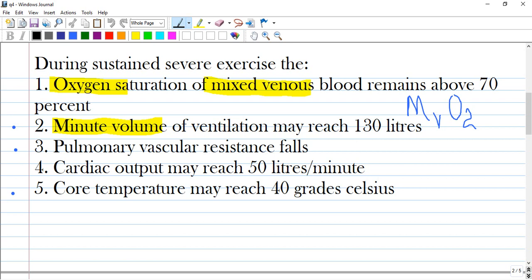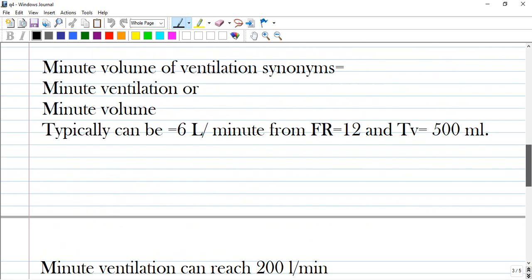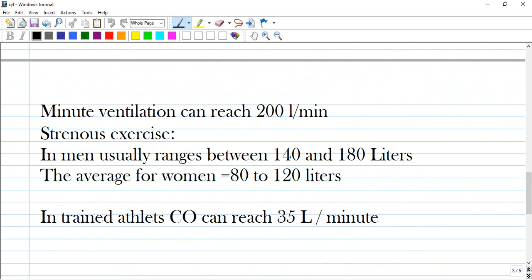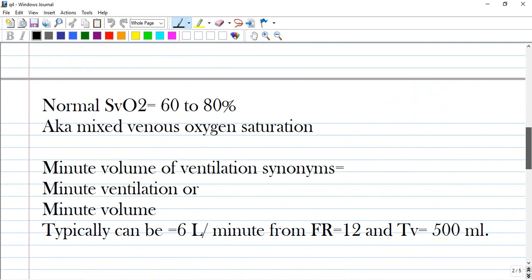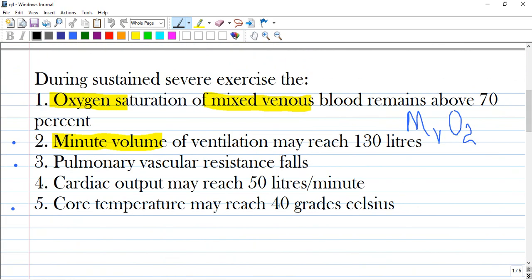Option 4: cardiac output may reach 50 liters per minute. I found that in trained athletes, cardiac output can reach a maximum of 35 liters per minute, and it, of course, is wrong.